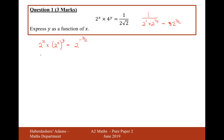Now let's sort out this power of a power. If you've got a power of a power, you multiply the powers together. So it's 2 to the 2y equals 2 to the minus 3 over 2. Let's simplify the left-hand side now. When you've got two indices and you're multiplying them, you add the powers together. So it's 2 to the x plus 2y equals 2 to the minus 3 over 2.